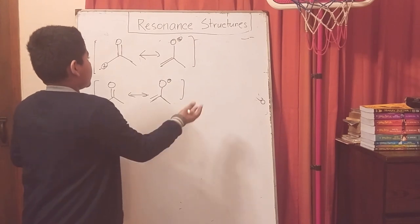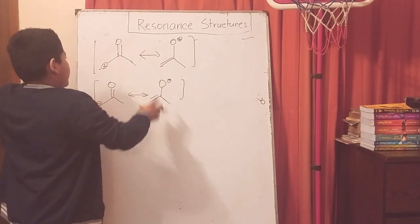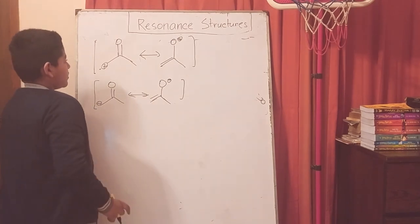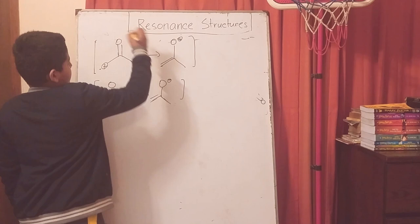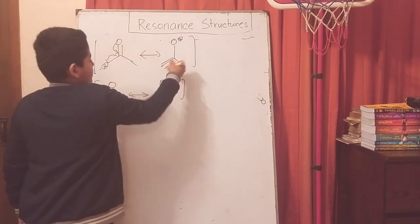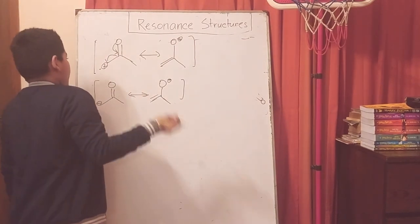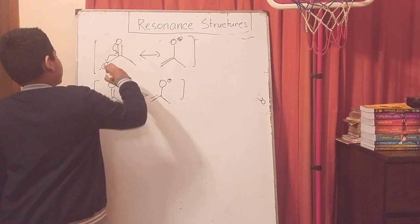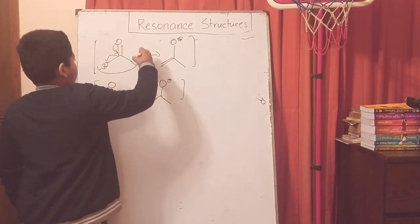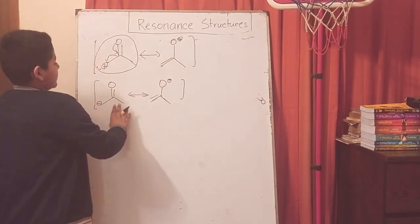Unlike the previous examples, there are valid resonance structures without equally contributing to the composite. Here, the carbon ion can be removed if this oxygen were to lose an electron. This carbon will accept if it loses one, so this carbon would be neutralized but the oxygen would have the formal positive charge. This is a valid resonance structure, but this is more contributing to the actual composite and the actual structure.